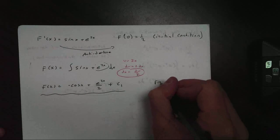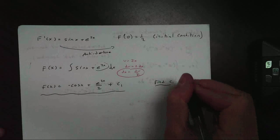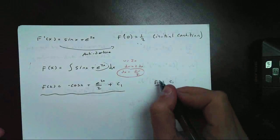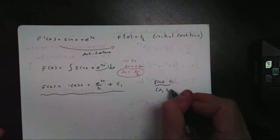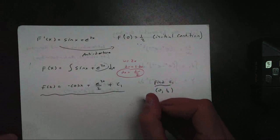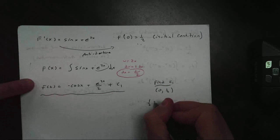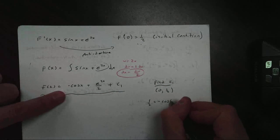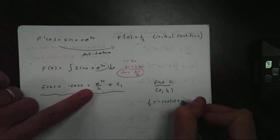But now we're being asked to find c1. That's where my initial condition comes in, 0, 1 half. Now, I plug it in, into my function, I get 1 half equals negative cosine of 0, plus this becomes e to the 0 over 2, plus c1.